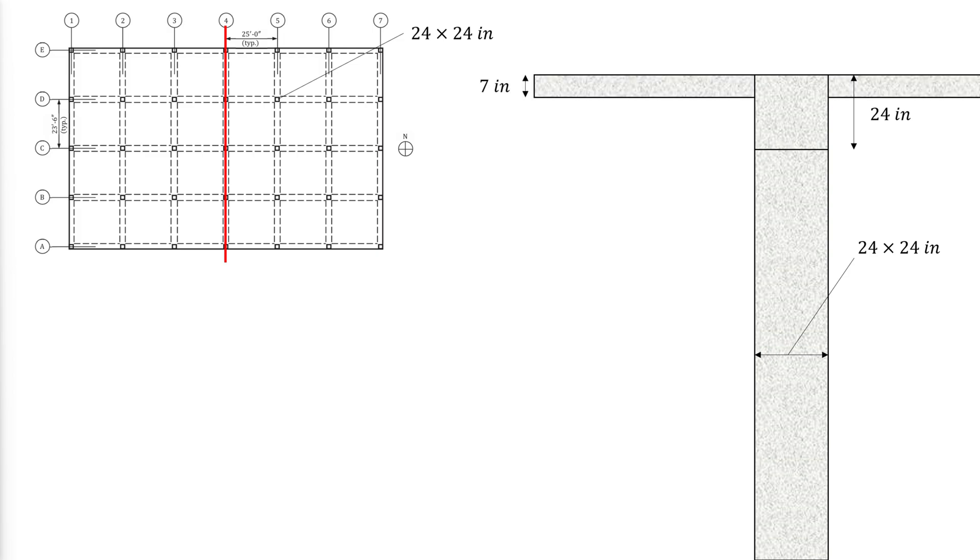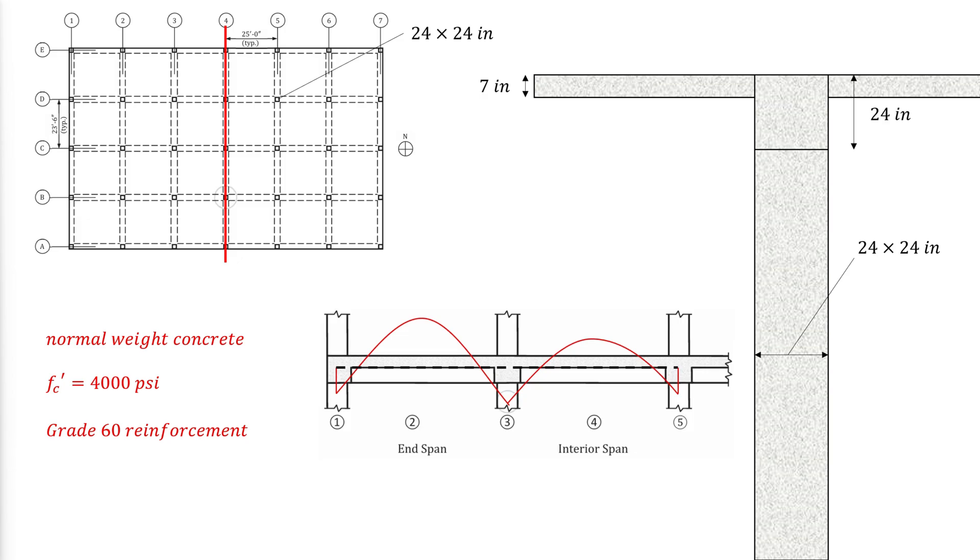The concrete used is normal weight concrete with a compressive strength of 4000 psi. The reinforcing steel used shall be of grade 60. The maximum negative moment occurs at the face of the first interior column and is 183.5 foot kips. The maximum positive moment occurs at the end span and is 134.7 foot kips.